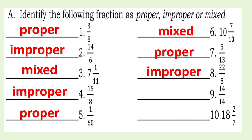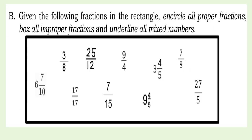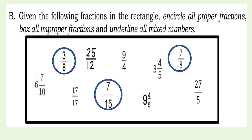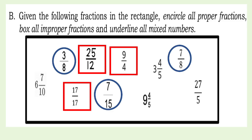Number 9: improper. Number 10: mixed. Letter B — given the following fractions in the rectangle, circle all proper fractions, box all improper fractions, and underline all mixed numbers. Proper fractions, improper fractions, mixed numbers.